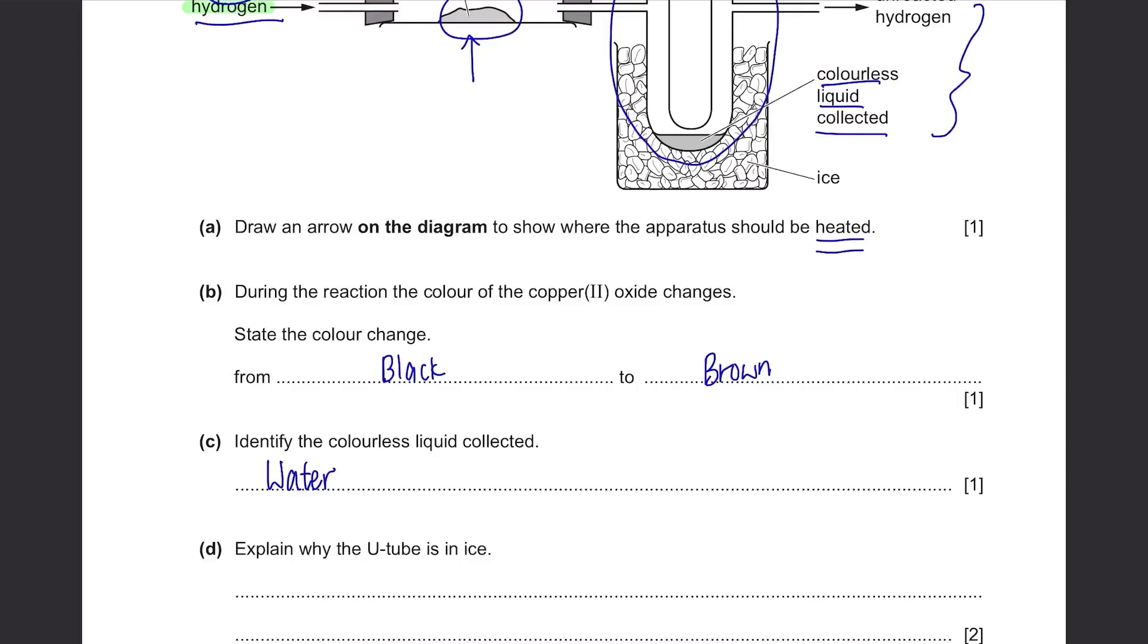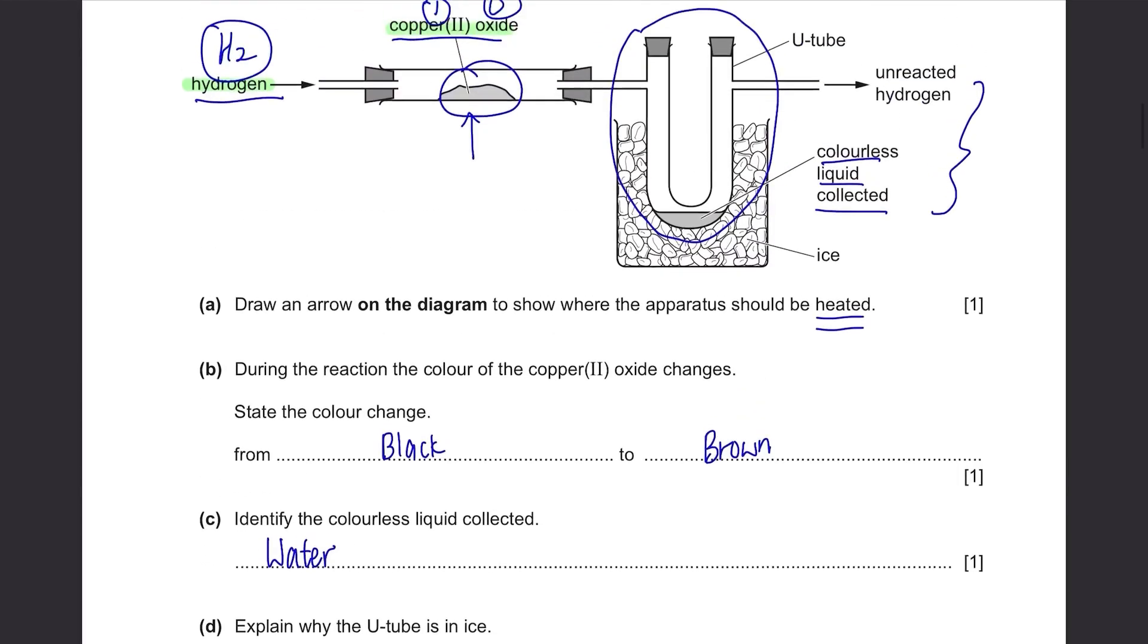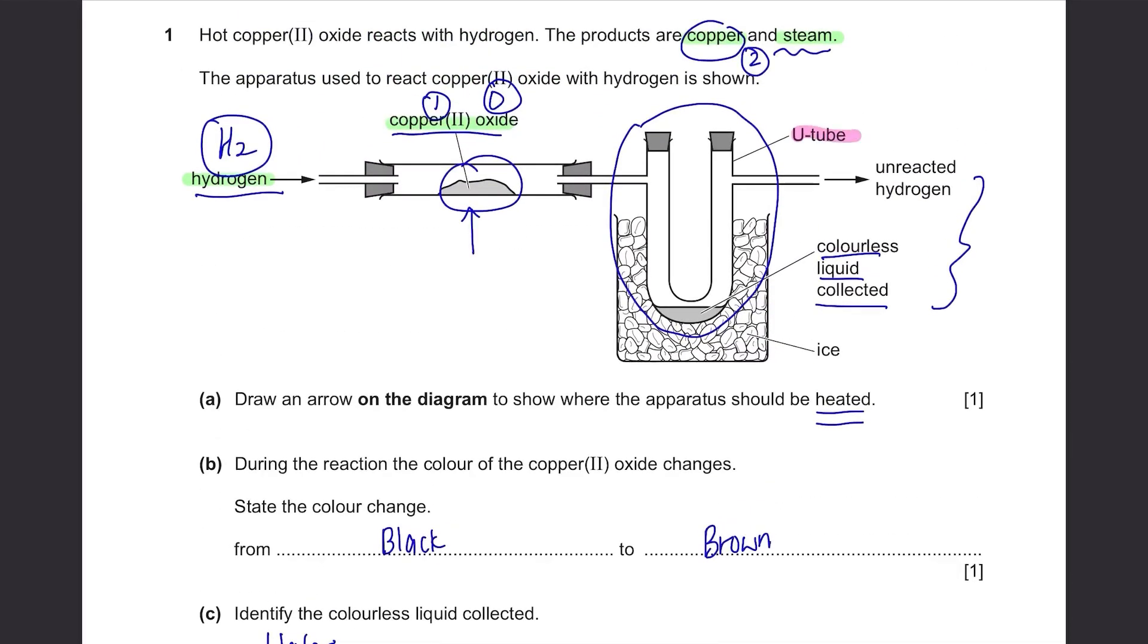Part D: Explain why the U-tube is in ice. This is the U-tube and it's in ice. Well, they told us that steam is going to be produced and it's easier to store in a liquid state instead of a gas state. So it's to condense the steam and change it to liquid.